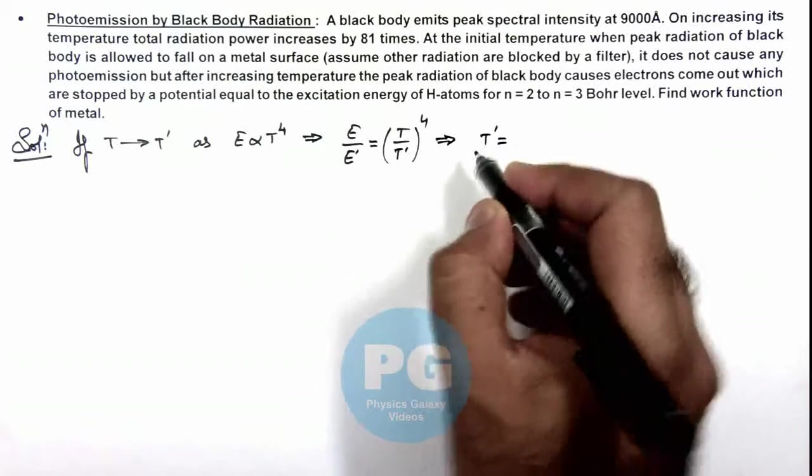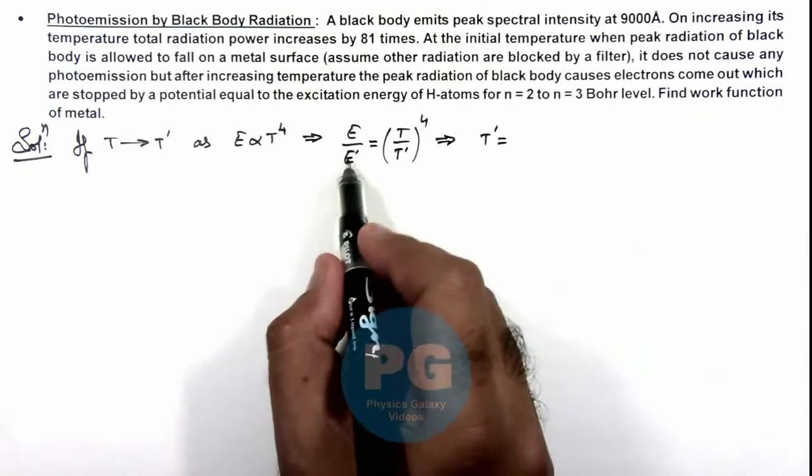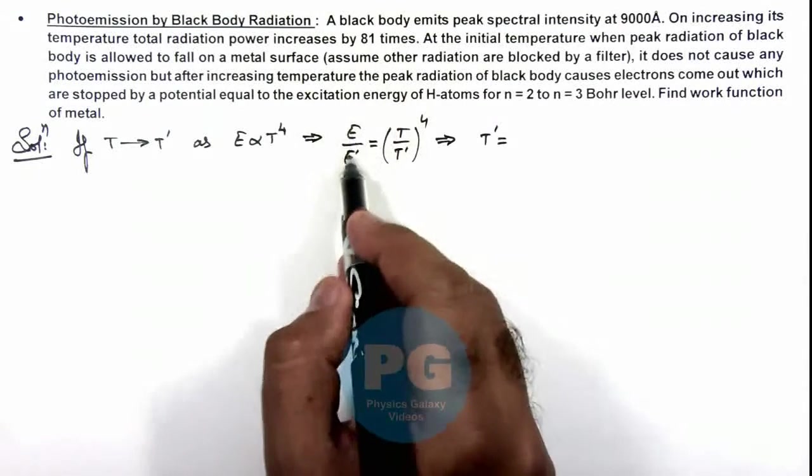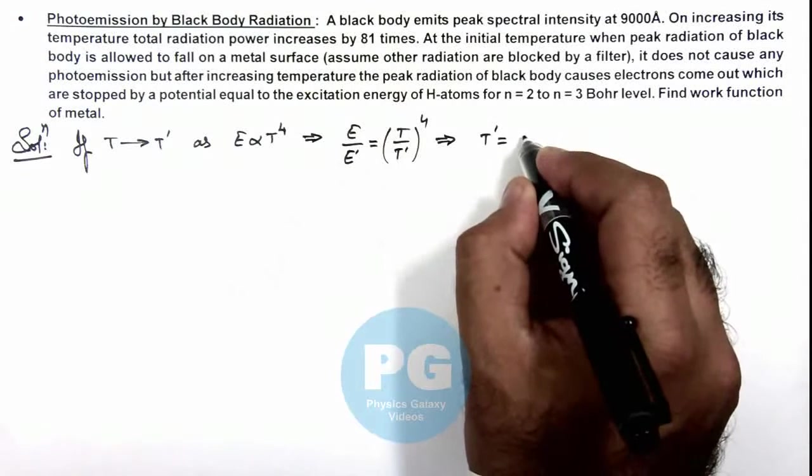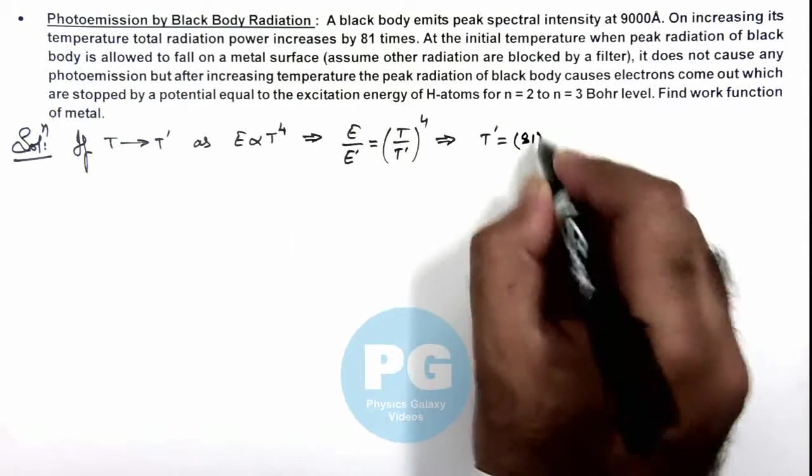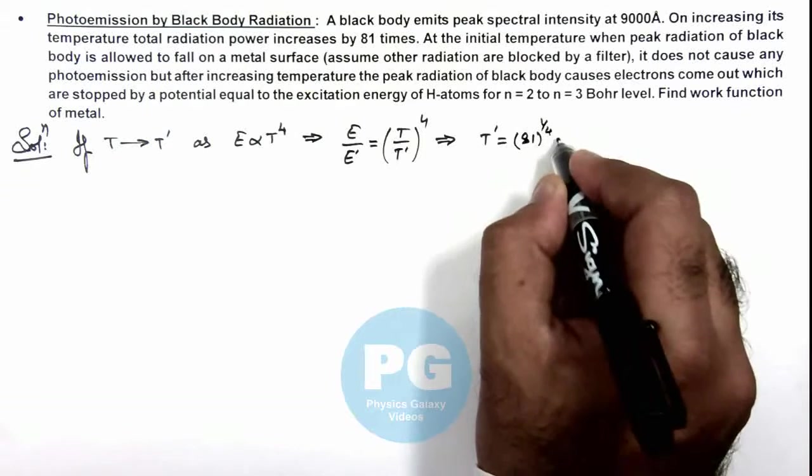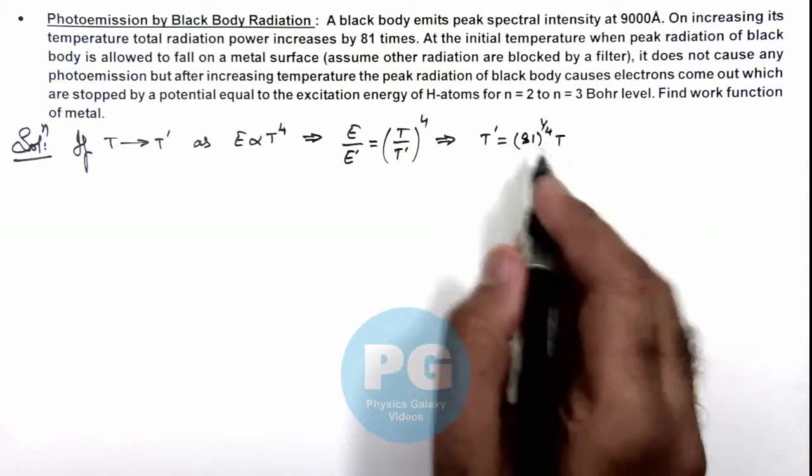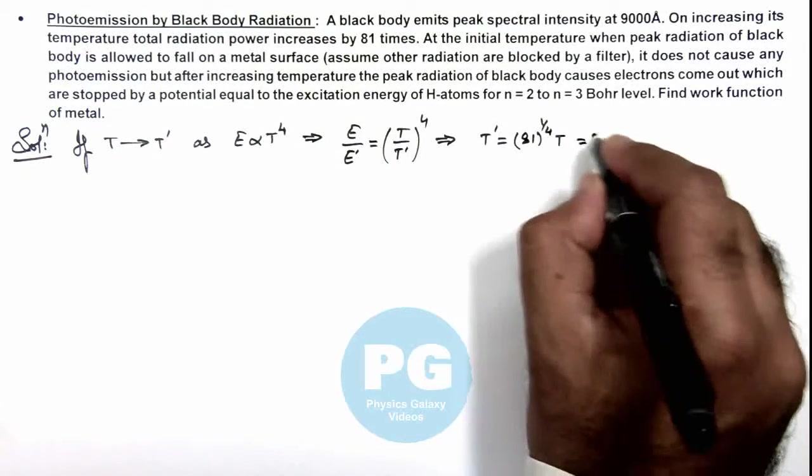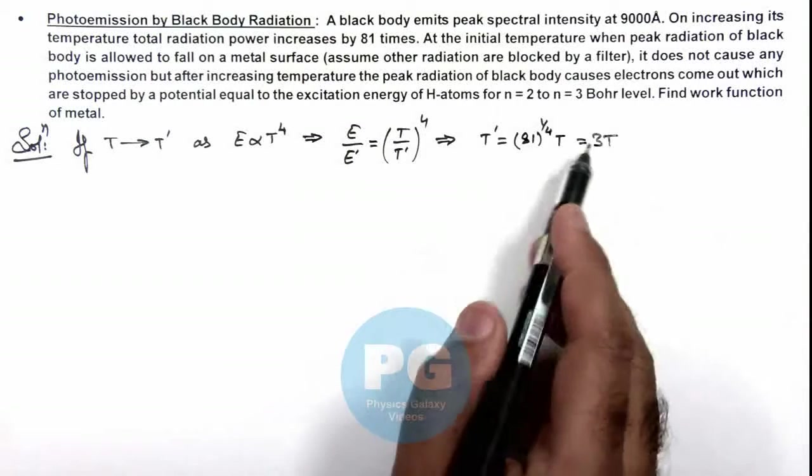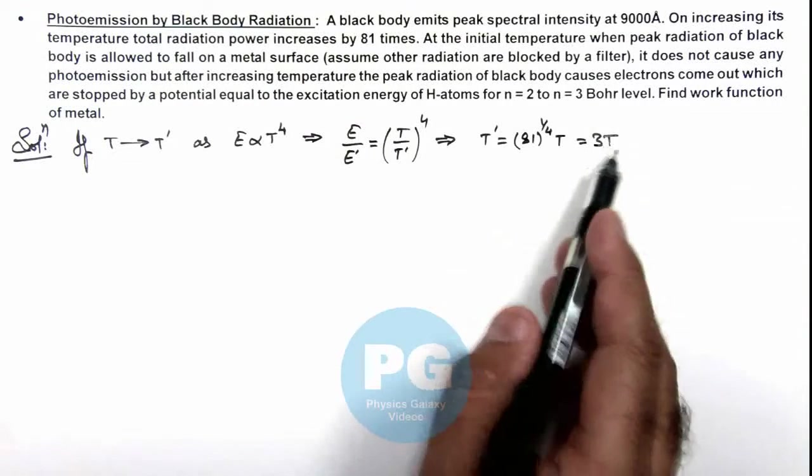Here E prime is given as 81 times the value of E, so it can be written as 81 to power 1/4 multiplied by T. So 81 to power 1/4 can be written as 3T. That means the temperature is increased to 3 times the initial value.